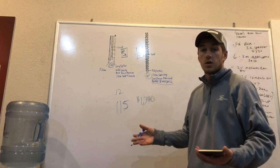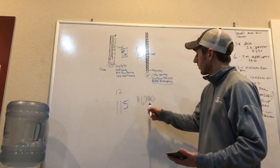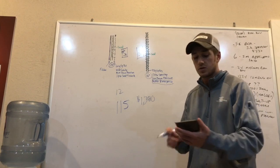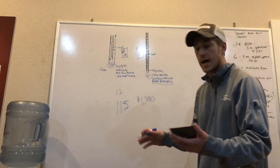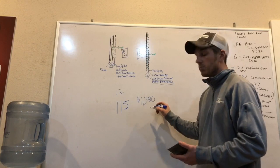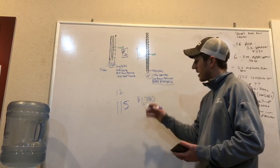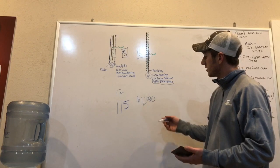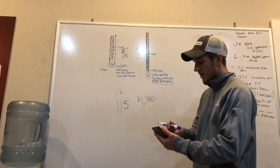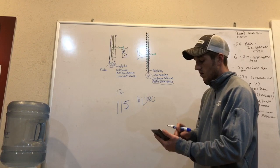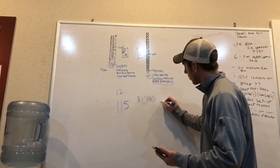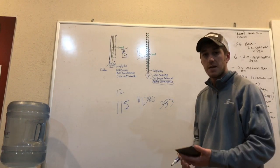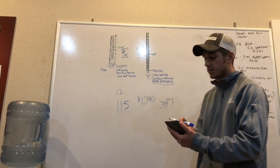Now, let's talk corn. Beck's has shown somewhere around that three to four bushel advantage in corn. So, let's call it three and a half. So, let's figure out how many bushels it takes to pay off the poly spike closing wheel. So, your investment of $1,380, let's divide that by $3.60 corn. That's a total of 383 bushels required of an advantage to pay back these poly spike closing wheels.